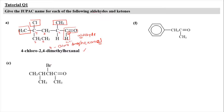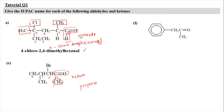For structure C, we have a carbonyl group attached to a CH3, which refers to the class of ketone. We find the longest carbon chain: 1, 2, 3, 4 — so 5 carbons, giving us pentane. Because it is a ketone, it becomes pentanone. The carbon-oxygen double bond is at carbon number 2, so it's 2-pentanone.